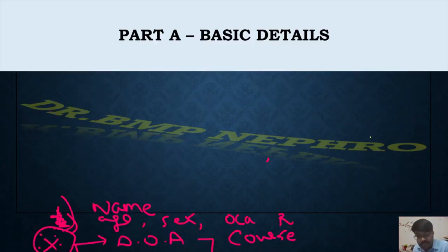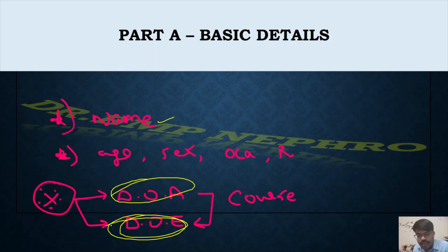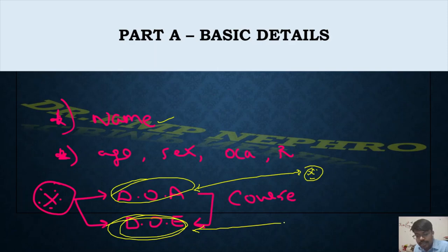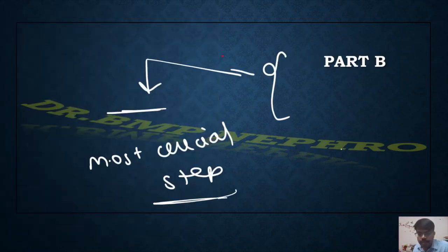Part A is the basic details of the patient, similar to MD medicine: name, age, occupation, and residence. In nephrology, the date of admission and date of examination are important components, because patients may have a hospital stay of 10 to 15 days. If there is a time lapse between admission and examination, it is very important to mention the course during hospital stay in the history of presenting illness.